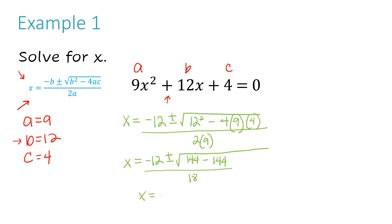I'm left with x equals negative 12 over 18. The reason this particular problem results in everything under the radical turning to 0 is because this equation has the base of a perfect square trinomial. If you look at this, you can see that if you had to factor this problem, you're really dealing with a perfect square trinomial, so things cancel out a little easier. Once I get my answer, I like to check it — I might graph it, or you could plug your x value back into the original equation to make sure you get a true statement. Let's say we graph it in our calculator.